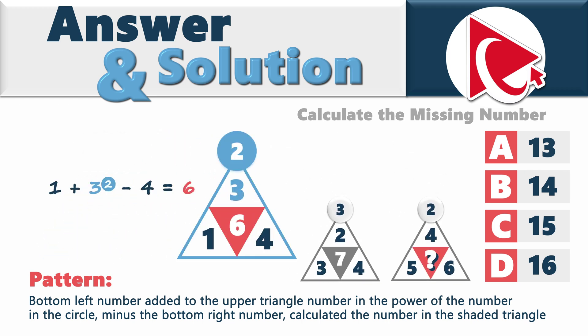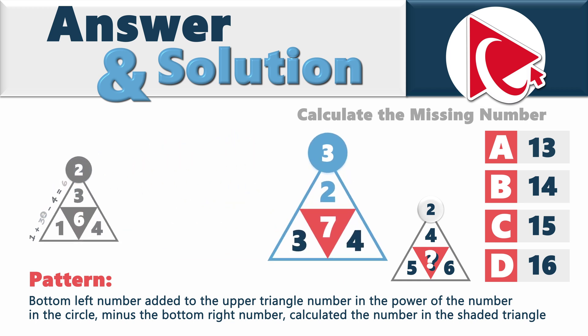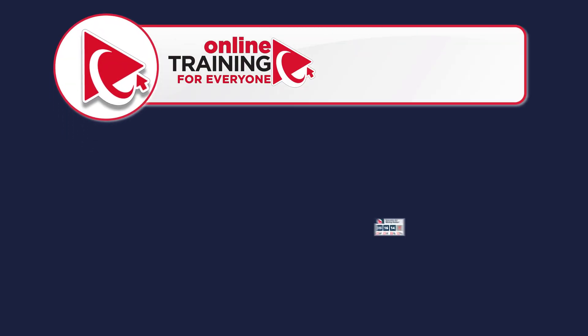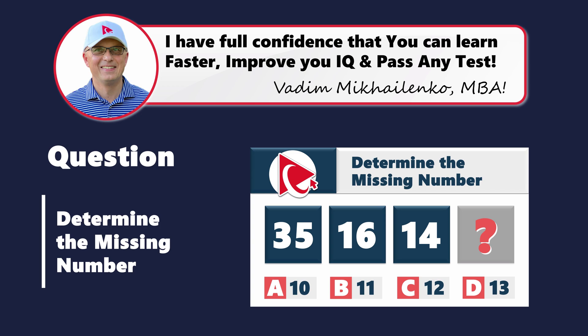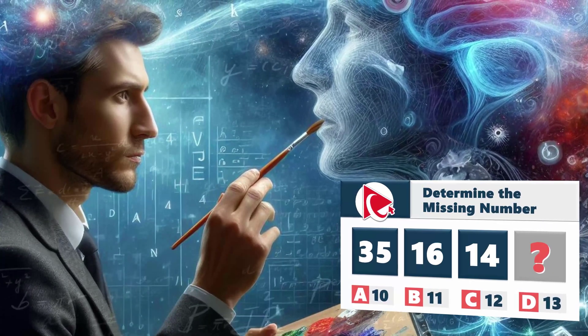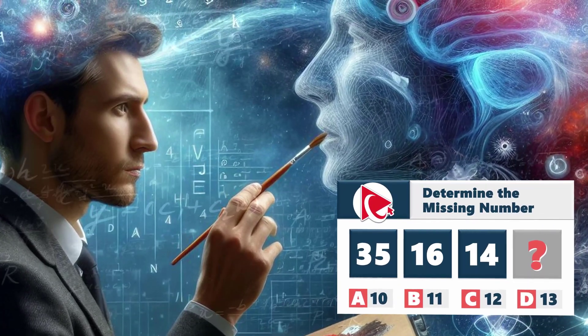Let's look at the example: 1 plus 3 in the power of 2 minus 4 equals 6. This is how the number inside the shaded triangle was calculated. Let's verify this logic with the second triangle: 3 plus 2 in the power of 3 minus 4 equals 7. Now we can easily calculate the missing number: 5 plus 4 in the power of 2 minus 6 equals 15. So the correct answer here is choice C, 15. With this magical question, you are not just solving this particular challenge, but you're composing a masterpiece of intellect. Each correct solution is a brush stroke in the portrait of your success.